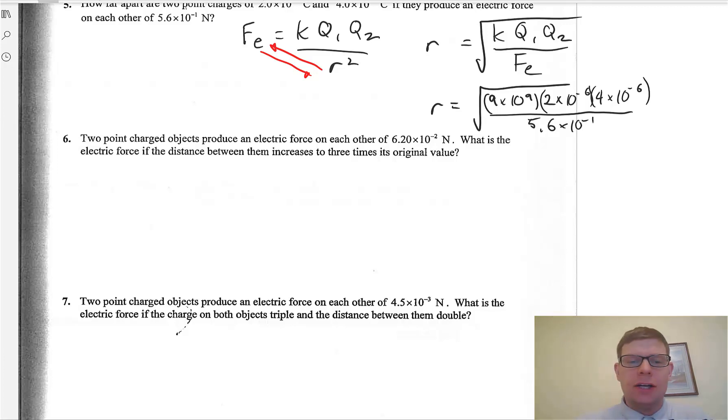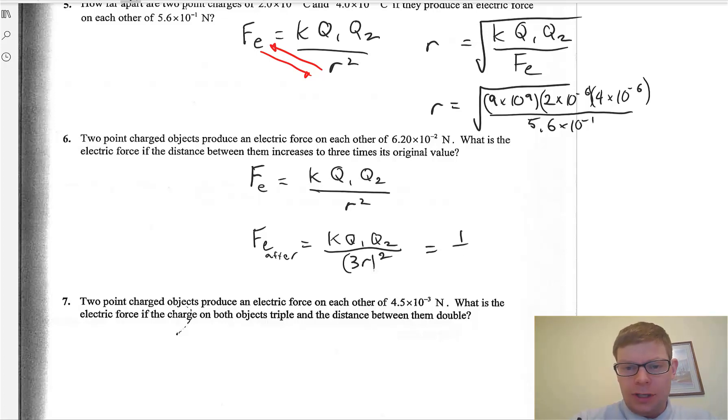These next couple are a bit different. They'll take some thinking. So, give it a second. Don't expect it to come immediately. So, we've got two point charged objects producing electric force on them of 6.2 times 10 to the minus 2. What's the electric force if the distance between them increases to 3 times its original value? So, keep in mind, your force is equal to KQ1Q2 over R squared. So, if you just change R, if you just change this guy, but leave everything else the same. I'm going to say after. So, all this junk is exactly the same, except it's got this extra, it's 3 times as big, or 3 times as far apart.